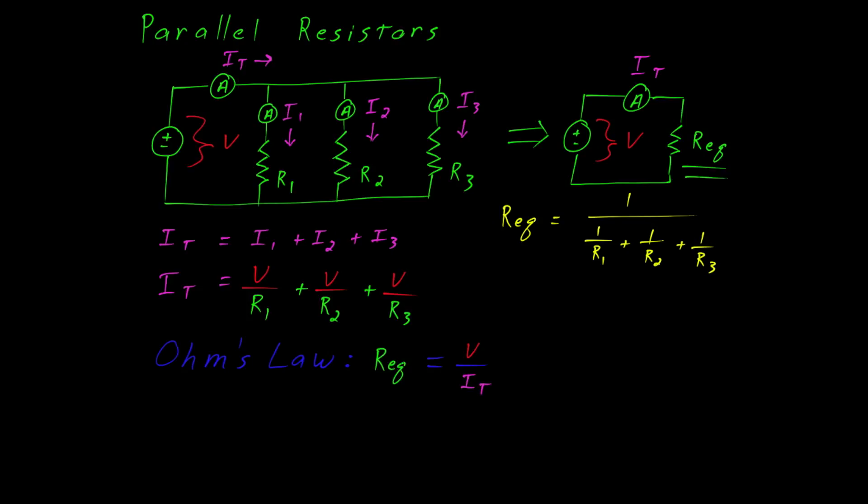Now, if we put these together, we can show that the equivalent resistance is equal to the voltage divided by the total current. Rather than writing total current, we're going to substitute in the values we calculated before. So V over R1 plus V over R2 plus V over R3.